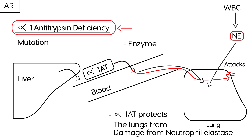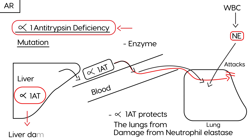Two main things happen as a result of this deficiency. First, the mutation makes it so that alpha-1 antitrypsin cannot go into the bloodstream, so it accumulates in the liver and causes liver damage. Second, because alpha-1 antitrypsin doesn't enter the bloodstream, it doesn't reach the lung.